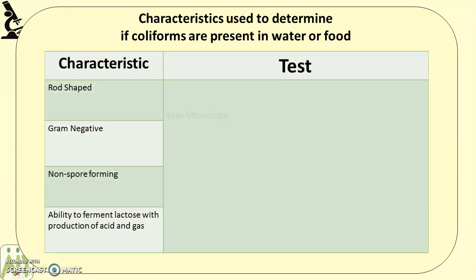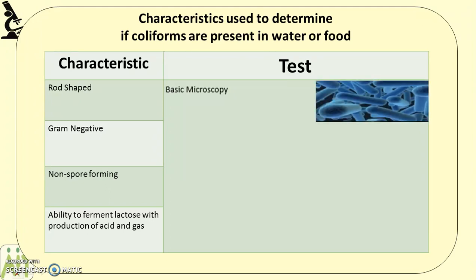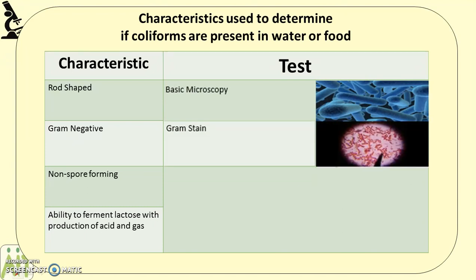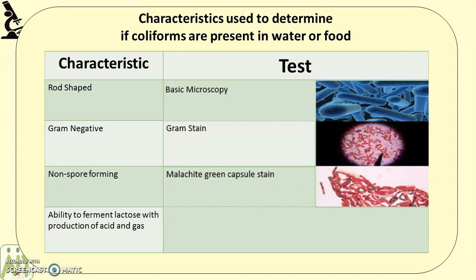With all these characteristics we can determine if coliforms are present in food or water. Since they are rod-shaped, we use basic microscopy to determine the shape. Since they are gram-negative, we use a gram stain. These are two tests you already know how to carry out. They are also non-spore-forming — last week you covered the malachite green capsule stain, where the capsule stains green and if there's no capsule, there is no green under the microscope.